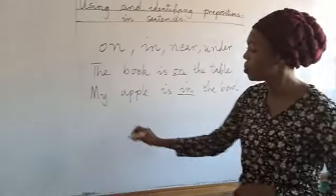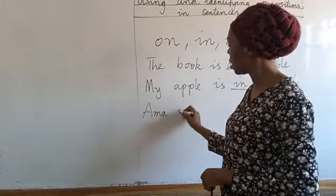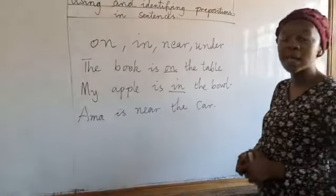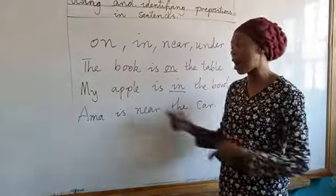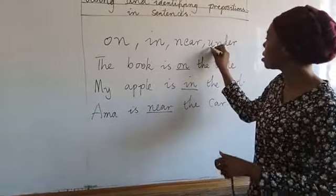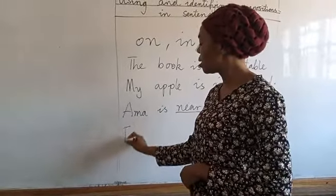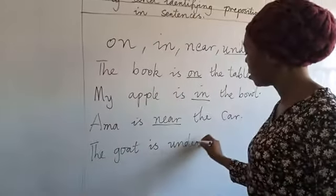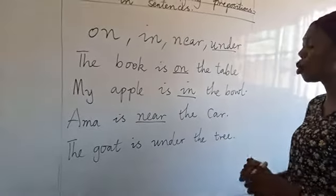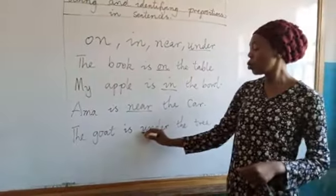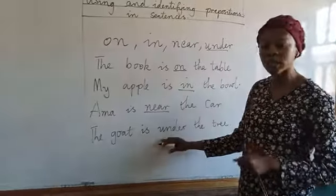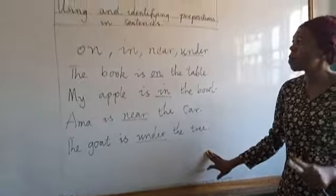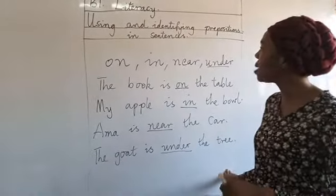Now we have 'near'. We can say: Ama is near the car. Where is Ama? Where can you locate Ama? Ama is near the car. Now let's use the last one, 'under'. We can say: the goat is under the tree. So our preposition indicating the position of the goat is 'under'.